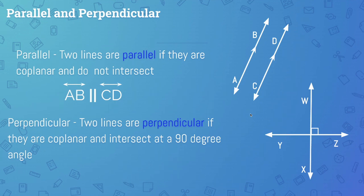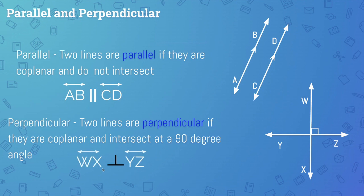Perpendicular lines: two lines are perpendicular if they're coplanar and intersect at a 90-degree angle. This notation — a right angle symbol — tells us that line WX and line YZ are perpendicular because of this right angle. The perpendicular symbol kind of looks like an upside-down capital T, and it indicates perpendicularity.